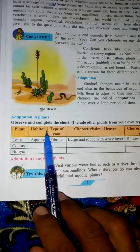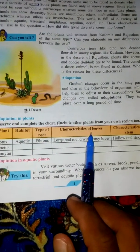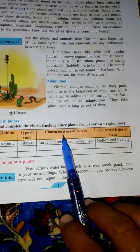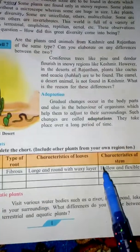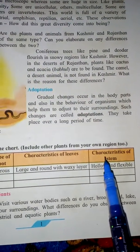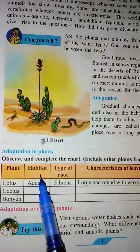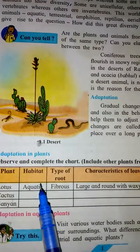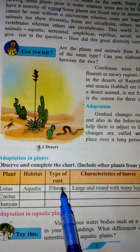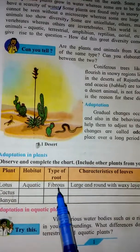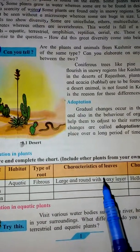In the chart, include the plant's habitat, type of fruit, characteristics of leaves — whether they are long, green, white, or colorful — and characteristics of the stem, whether it is long, circular, thick. For example, the lotus plant: its habitat is water. Its roots are fibrous — thin, thread-like roots spread out. Many fibers are present.